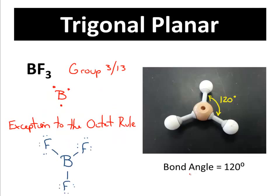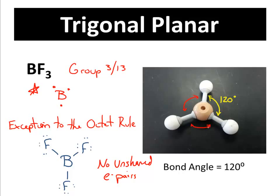The next shape is called trigonal planar. In this shape, every bond is 120 degrees apart from each other. This is typical of group 3 or 13 elements, and specifically we're really only going to see this in the element boron. Boron is an exception to the octet rule — it only needs six electrons in the outer shell. What you see here is boron trifluoride, where one boron is bonded to three different fluorines. A key thing is that there are no unshared electron pairs on the central atom. All its electrons are used up, so when it spreads apart, it can spread to 120 degrees in every direction.